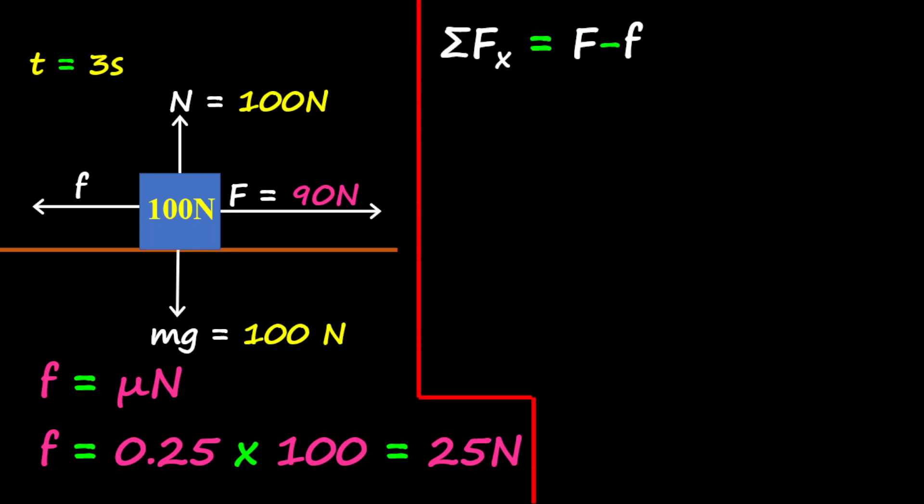The next step we will find here is the total force along the X component. The two forces that are acting on the X component are the frictional force and the applied force. So therefore, since they're going in opposite directions, we're going to subtract them.